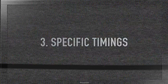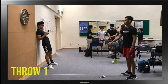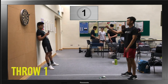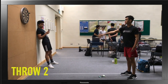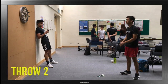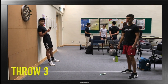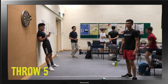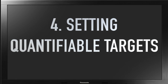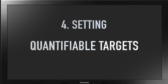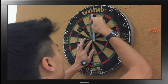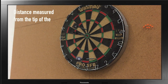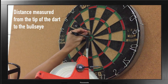Number three, setting specific timings. We have fixed each trial at five throws, with a five-second interval between each throw. Number four, setting quantifiable targets. We chose to measure our progress by measuring the distance from the tip of the dart to the bullseye.